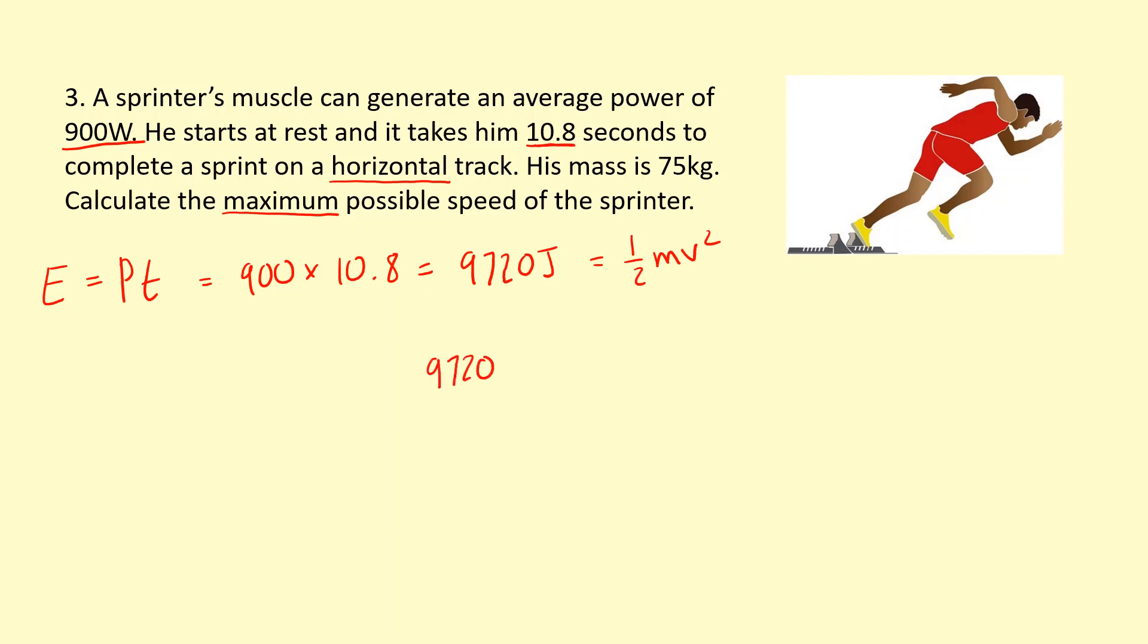9,720 multiplied by 2, divided by the mass, which is 75, and then square root it to get the velocity. That gives me 16.1 meters per second, which is much higher than the current record. The reason for this is because we've ignored any dissipated energy. So in reality, the actual speed he can go is going to be lower than this.